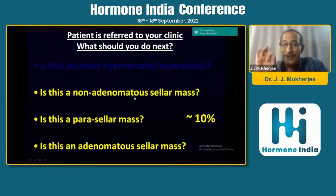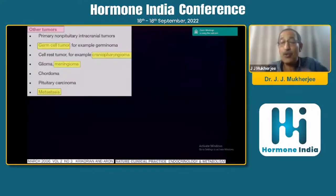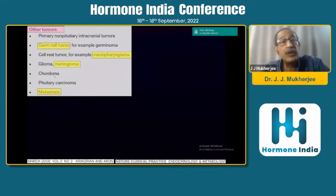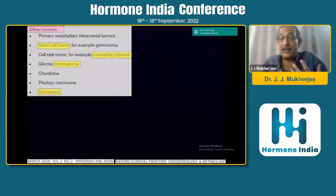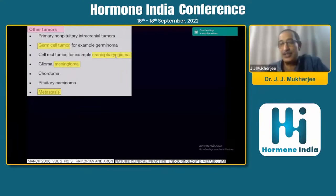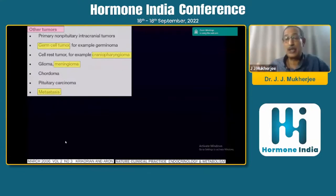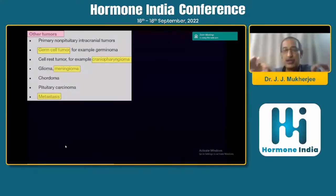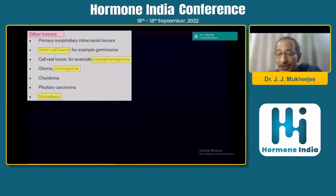There are many non-adenomatous sellar masses: germ cell tumor, craniopharyngioma, meningioma, chordoma, pituitary carcinoma, and metastasis. These are very rare — in my career I've seen three or four metastases. Meningioma is quite common actually. Craniopharyngiomas generally present in children but you can have adult-onset craniopharyngioma; majority of times they are not an incidentaloma because there are symptoms. Germ cell tumors are generally not an incidentaloma either.